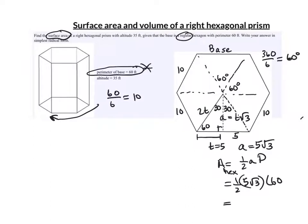So we'll simplify that. Half of 60 is 30. And 30 times 5 is 150. So the area of the hexagon is 150 root 3.